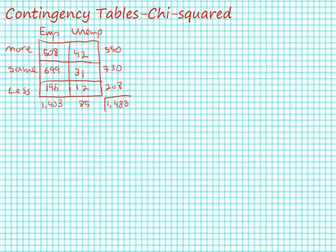After calculating our percentage table and comparing across our independent variable and seeing that there is something of a difference, we'd like to test for the statistical significance of that difference. To do that we're going to calculate a chi-squared statistic. I'm showing the table with our observed values in each cell.